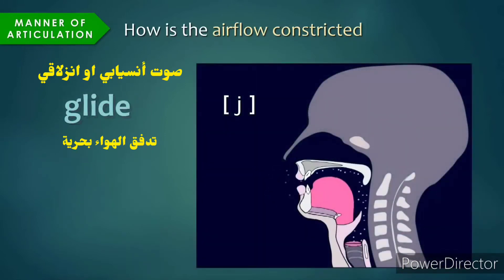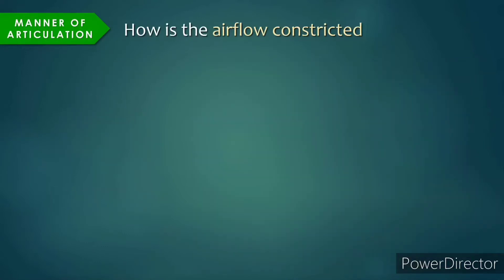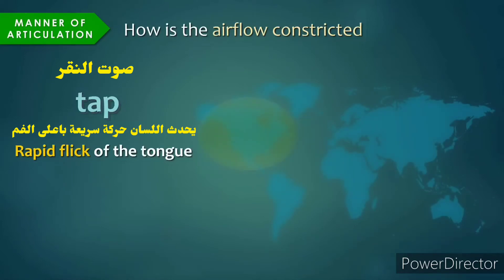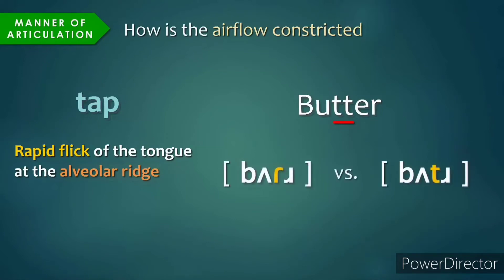Glide sounds are produced with very little constriction of airflow — so little, in fact, that they are often referred to as semivowels, such as w, y. Finally, we have tap sounds, which involve a rapid flick of the tongue to some place of articulation. In North American English, we only have one tap, at the alveolar ridge. You can hear the tap sound in the word 'butter' — notice that where we write two t's in English, your tongue is producing a tap rather than a full stop. In North American English you say 'butter,' compared to received pronunciation where you say 'butter' with a full t stop.